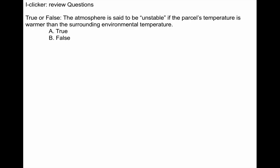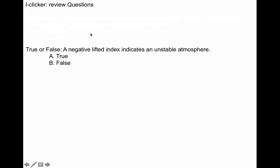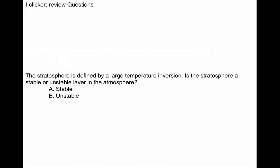True or false: the atmosphere is said to be unstable if the parcel's temperature is warmer than its surrounding environment. Absolutely — this is a true statement. True or false: a negative lifted index indicates an unstable atmosphere. Also true. Another one: the stratosphere is defined by a large temperature inversion — is it stable or unstable? The stratosphere warms with height, so you can't fly a hot air balloon into hot air. This is a stable situation — the air does not want to ascend into the stratosphere.